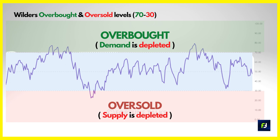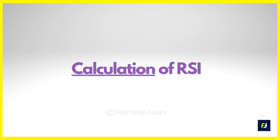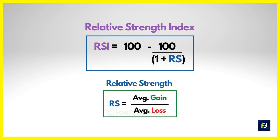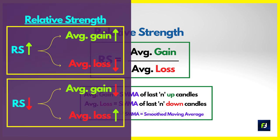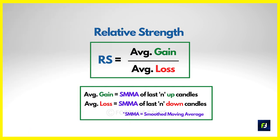Let us briefly look at the calculation behind RSI. The formula is: RSI = 100 − (100 / (1 + RS)), where RS is the Relative Strength, given by average gain divided by average loss. The only tricky part is the relative strength calculation. In simple words, the RS value goes up when the average gain is large or when the average loss is small.